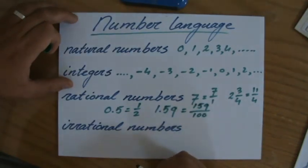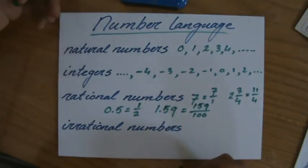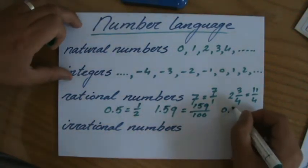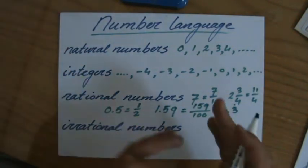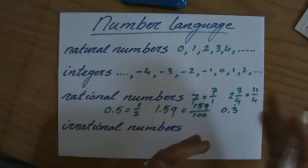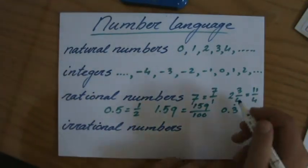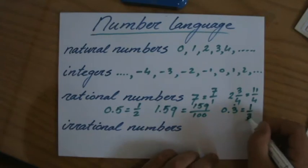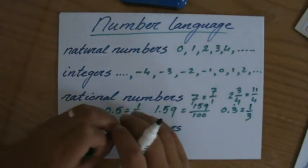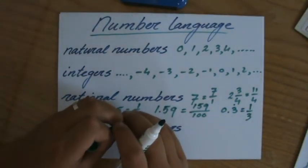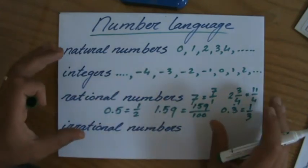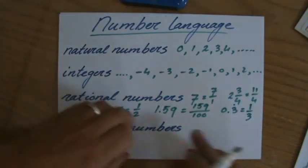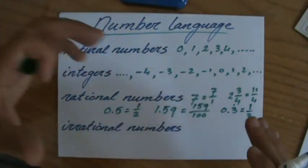You could also have 0.3 with a little dot on top, meaning 0.3333333 — a recurring decimal — which is also rational because it can be written as one over three. So whether you have a terminating decimal or a recurring decimal, we are talking about rational numbers.